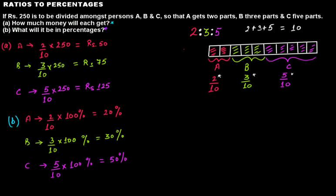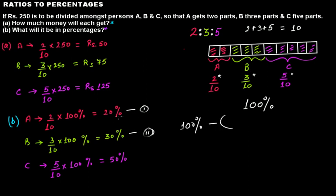An important shortcut: once we know that A is 20% and B is 30%, we don't need to calculate C separately — since the whole is 100%, C's percentage is 100% minus (20% + 30%) = 50%. This is all about converting ratios to percentages. Thanks for watching — see you in the next video!